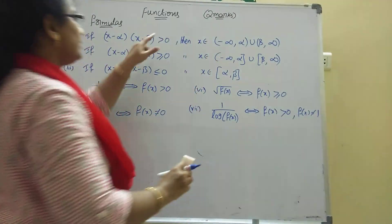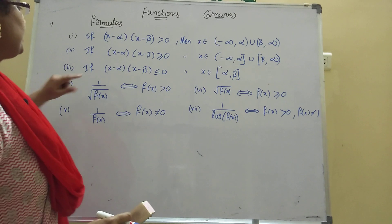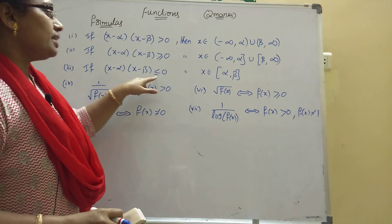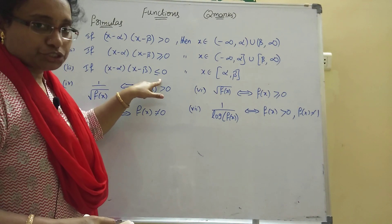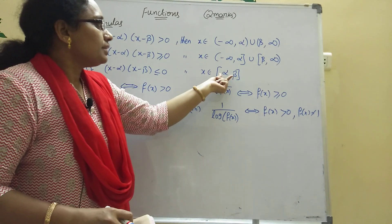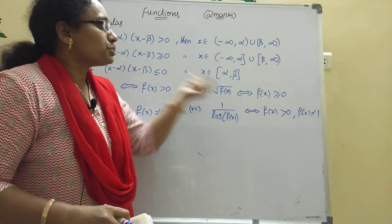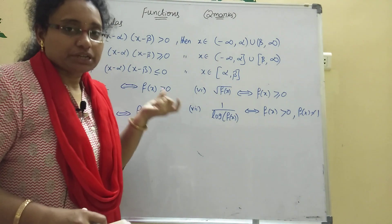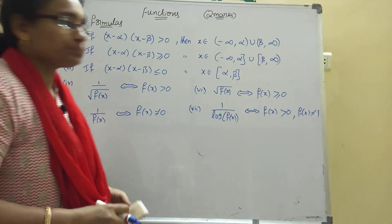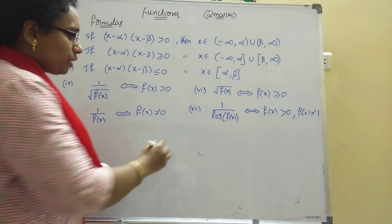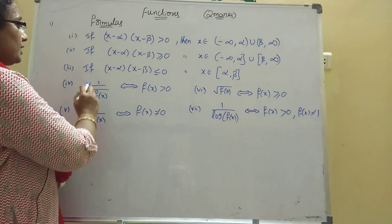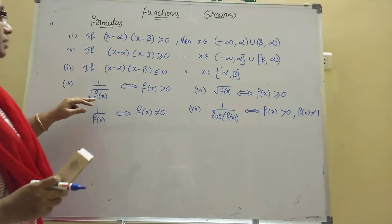That is the difference between open and closed brackets. Next, the third formula: if (x - α)(x - β) is less than or equal to zero, then x belongs to the closed interval [α, β]. That is, the closed bracket of alpha comma beta.